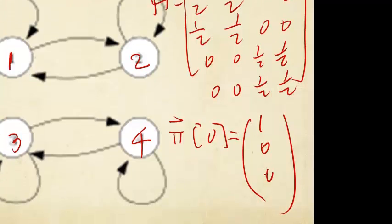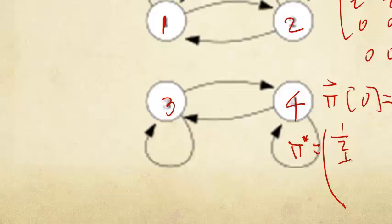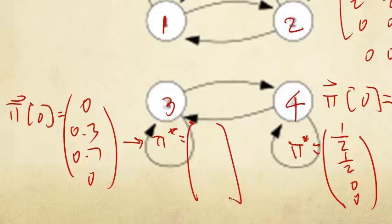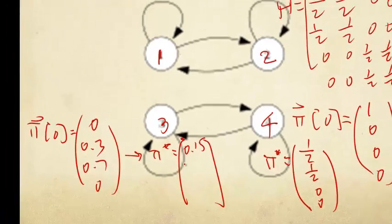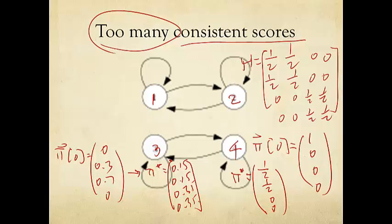Indeed, if I start with an initialization of (1, 0, 0, 0), then I end up with the importance score being (0.5, 0.5, 0, 0). However, if I start with an initialization of (0, 0.3, 0.7, 0), then I end up with the importance score vector at the end as (0.15, 0.15, 0.35, 0.35) for these four web pages.